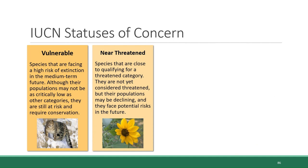Near-threatened is the next category. This includes species that are close to qualifying for a threatened category but are not yet considered threatened. However, their populations may be in decline and they may face threats in the future. An example is the serpentine sunflower, which is endemic to California and Oregon. It has an estimated habitat range of only 160 square kilometers, mostly mountainous areas at risk from climate change.